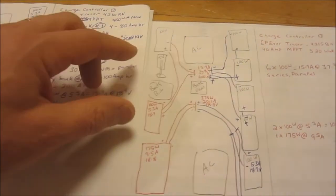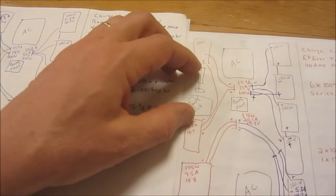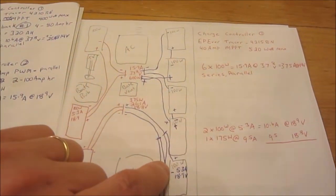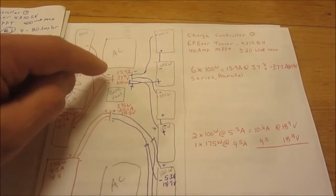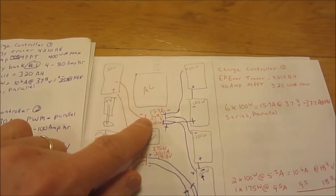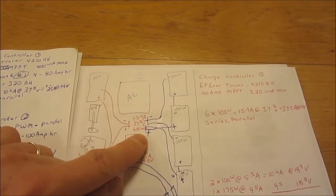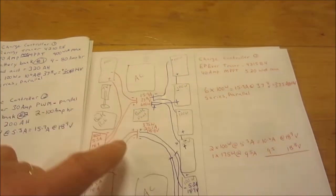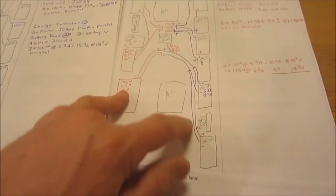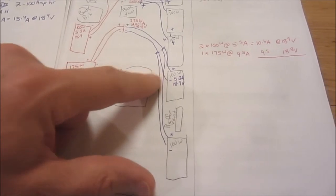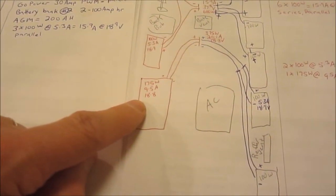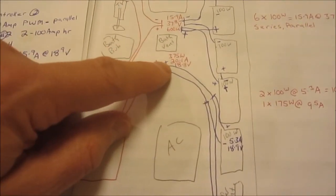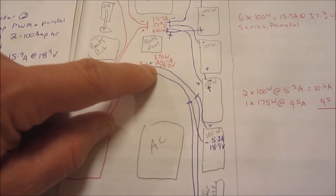100 watts in series and then come in with these other four that are already existing, they're in series parallel. So that's going to be 15.9 amps at 37.8 volts, 600 watts total. My other battery bank two, I'll still be using these two 100 watt panels plus the 175 watt panel at 9.5 amps for a total of 20.1 amps at 18.8 volts.